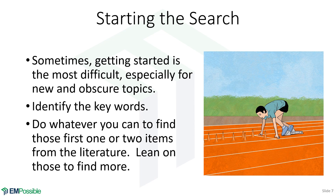Sometimes it could take a day or two before you even find that first paper. But once you do, those papers will often have the keywords — the words that people are using to describe the subject. Very often those papers will also reference other places. So finding that first paper is key because that's where you get the keywords and some initial citations to start your literature search.